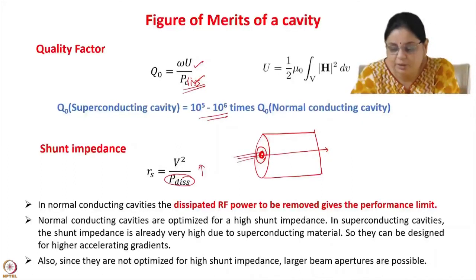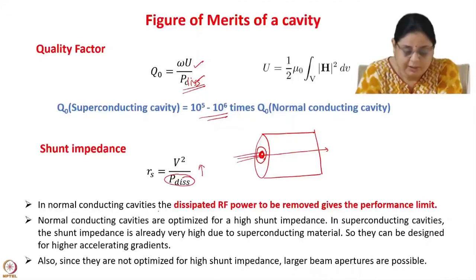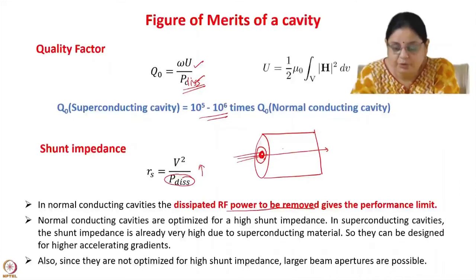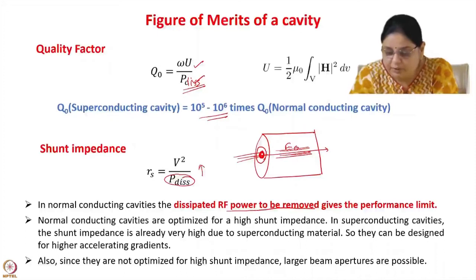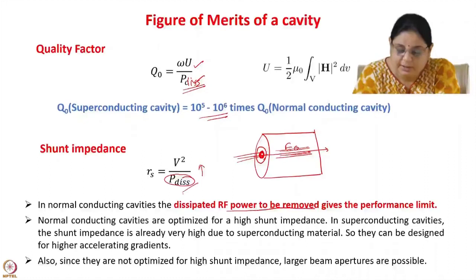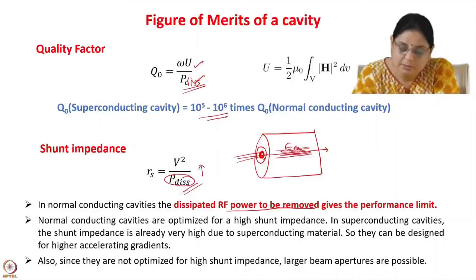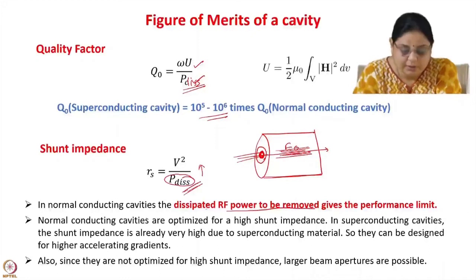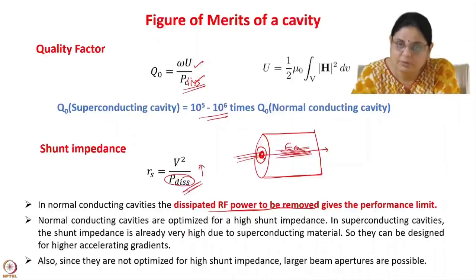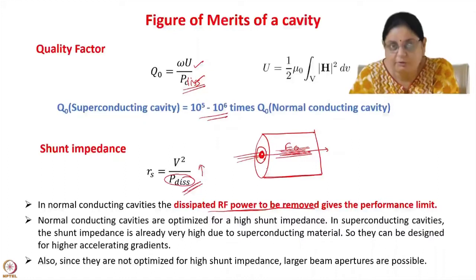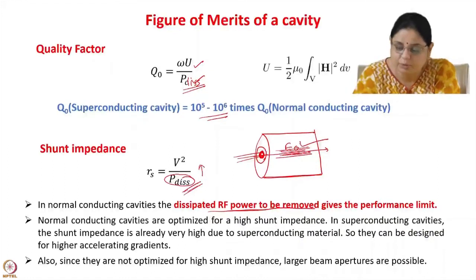In normal conducting cavities, the dissipated RF power to be removed gives the performance limit. If you choose an accelerating field E₀, there is a certain power dissipation, and how high an electric field you can choose depends upon how much power can be removed by cooling the cavity. Whereas in a superconducting cavity, this power is not very high, so you can afford to increase the accelerating voltage. Your accelerating field or accelerating voltage is very high in a superconducting cavity.